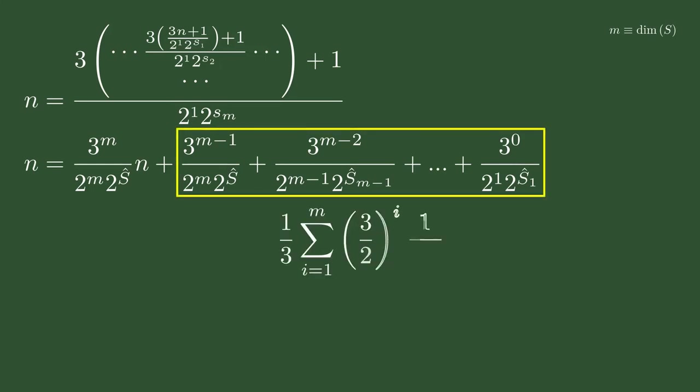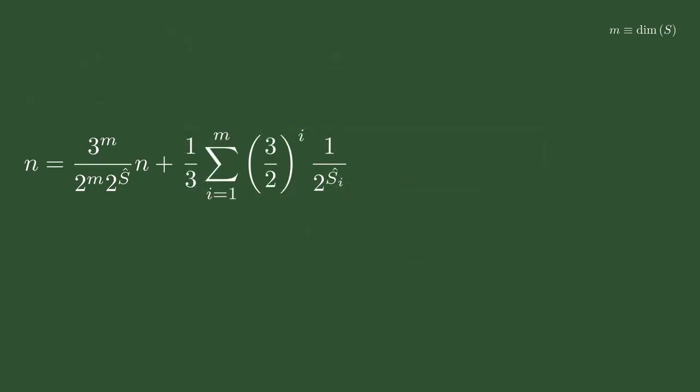We can reduce the series of fractions that don't have n next to them into a summation and have a clean-looking equation. Looking at this equality, we see that the summation will always be positive, so the fraction scaling the n value must always be less than 1. We can then define a lower bound for the times n can be divided by 2, which would be a bound on the sum of S. To find an upper bound, think about how S-hat equals m means an average division by 4 in each step of the loop. The only way to increase the numerator by a factor of 4 with the equation 3n plus 1 is by having n equals 1. So any counterexample must have S-hat less than m.